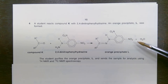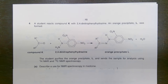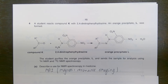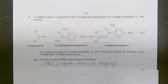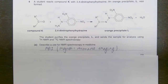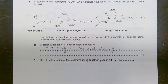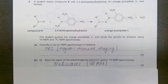The students purified compound L and they've analysed it with H1 NMR and C13 NMR spectroscopy. The first sub-question asks: describe a use for NMR spectroscopy in medicine. The answer is MRI, which stands for magnetic resonance imaging. The next question asks for the region of the electromagnetic spectrum used in H1 NMR spectroscopy. The answer is radio waves, which are around about 100 MHz.